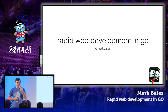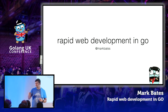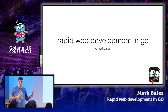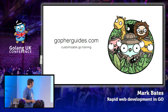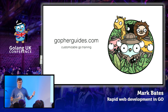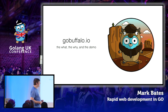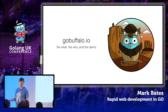So who am I? My name is Mark Bates. You can find me on Twitter, GitHub, and Slack as Mark Bates. I run a company called Gopher Guides, which does customizable training — if you have training needs, come find us. I also run gobuffalo.io, which is what we're going to talk about today.